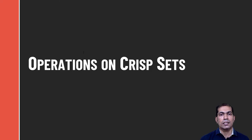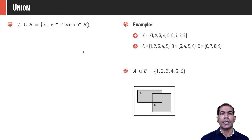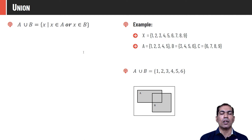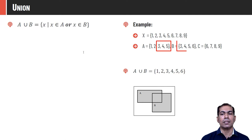Let's discuss operations on crisp sets. Union: A ∪ B is the collection of all elements that are members of A or B — if an element is in both sets, it is written only once. For our universe of discourse 1 to 9, A = {1 to 5}, B = {3 to 6}, C = {6 to 9}. A ∪ B = {1 to 6}. Elements 3, 4, and 5 are common in A and B but written only once. The Venn diagram shows A ∪ B highlighted in gray.